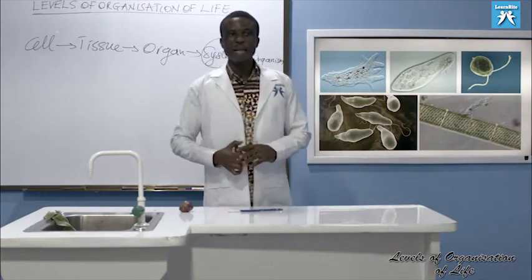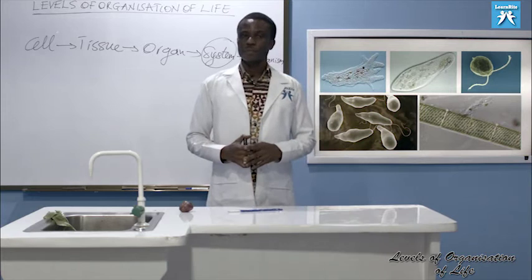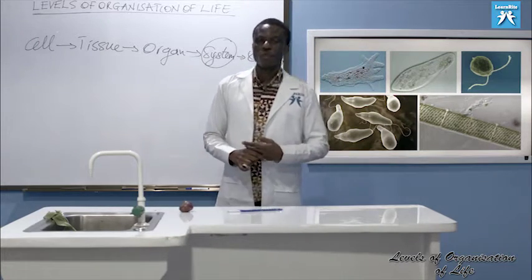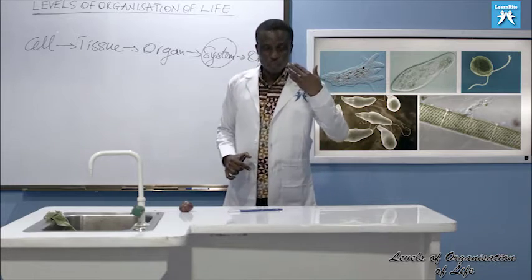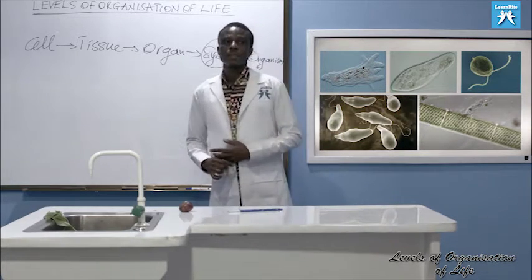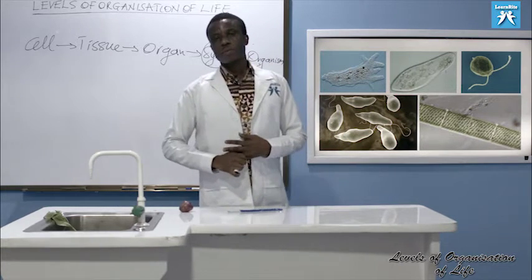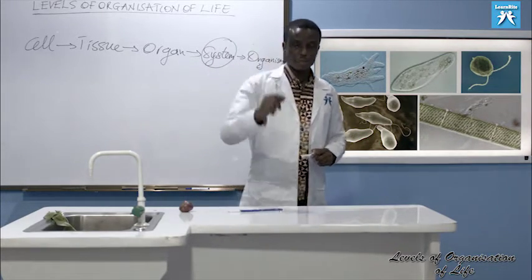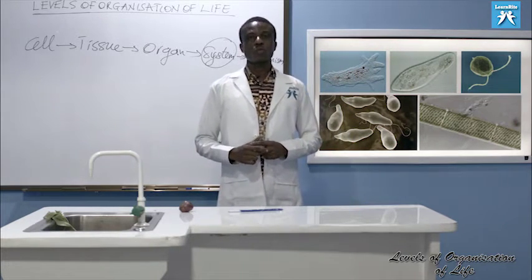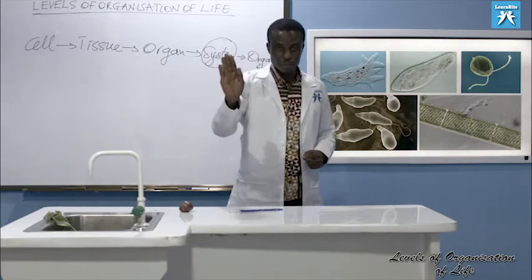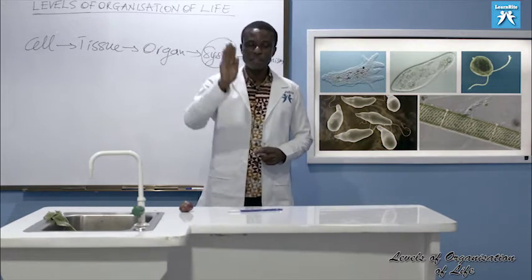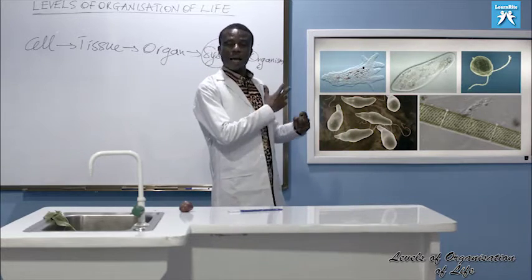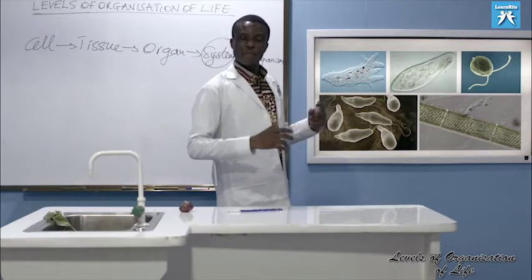Let's look at examples of living things at the various levels of organization of life. At the cellular level, the individual organism is made up of only one cell that can perform all life activities. If that cell cannot perform all life activities, then it is not a living thing on its own — it's just a cell.